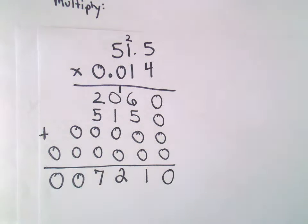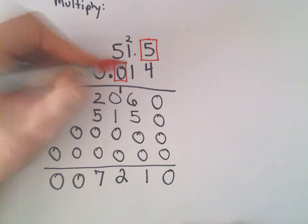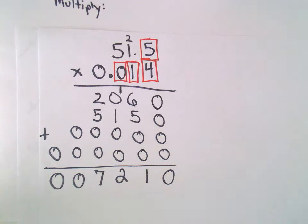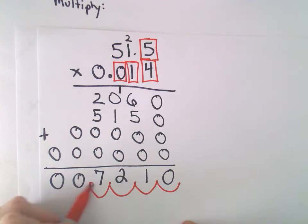Now I just count. To the right of the decimal sign, we have one digit, two digits, three digits, four digits total to the right of the decimal sign. So that's how many places I've moved my decimal. One place, two places, three places, four places.